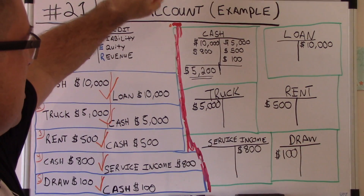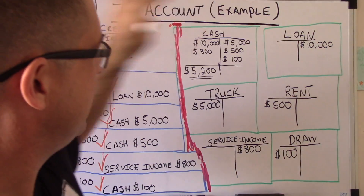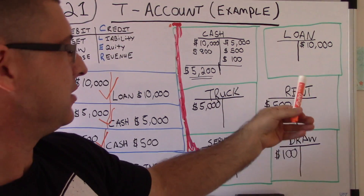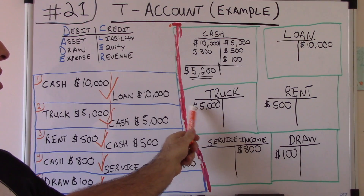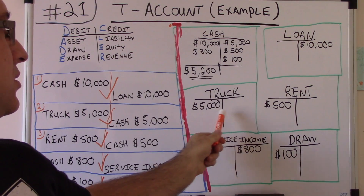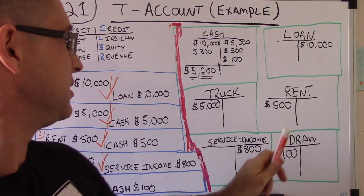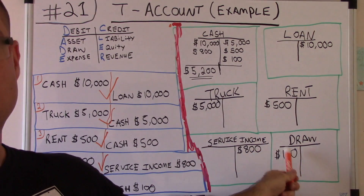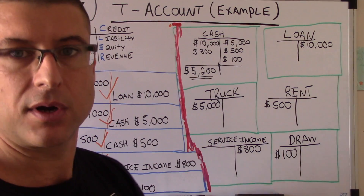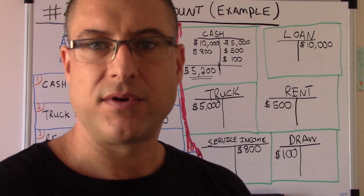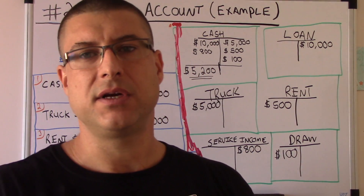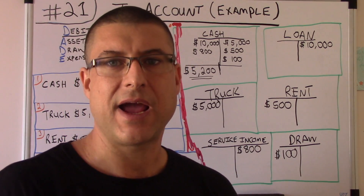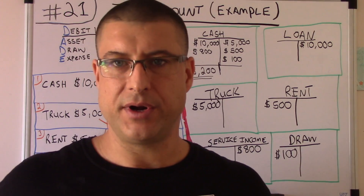Here are our t-accounts. The ones with only one number — that's going to be the balance. Loan: $10,000 credit balance. Truck: $5,000 debit balance. Rent: $500 debit balance. Service income: $800 credit balance. Draw: $100 debit balance. Cash is the one we need to work through, and this is exactly why t-accounts matter — I used to get so many questions asking how cash ended up equaling $5,200.